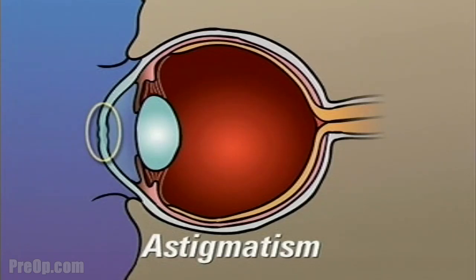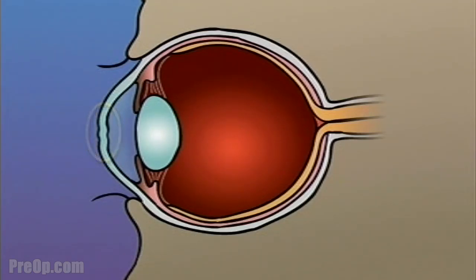Astigmatism occurs when the cornea is unevenly curved, causing light rays to fall off center, or not to focus properly at all.